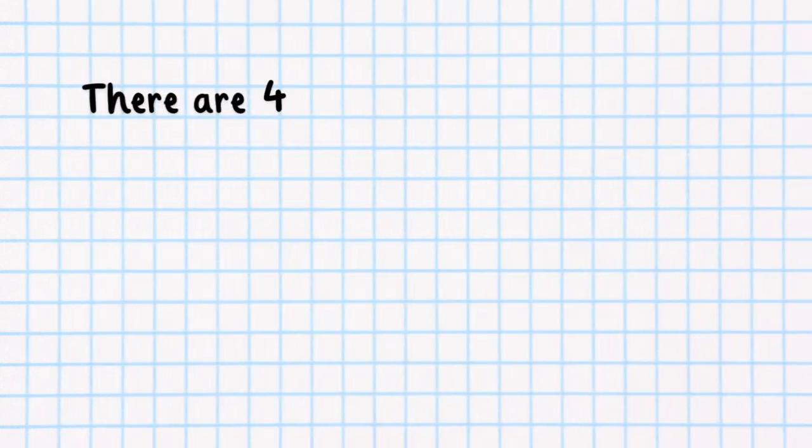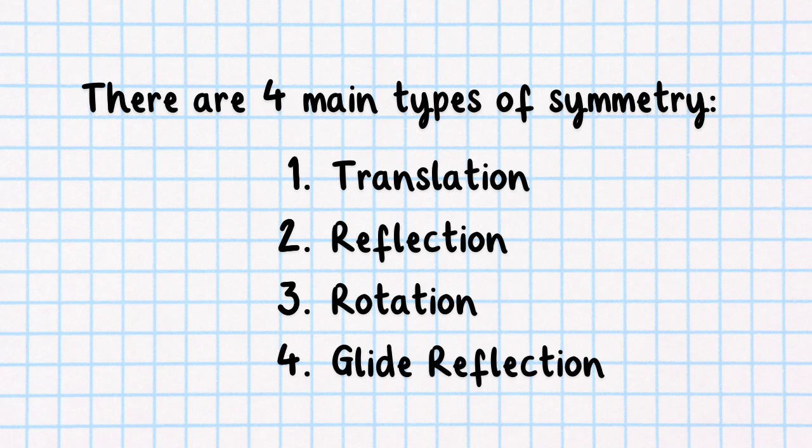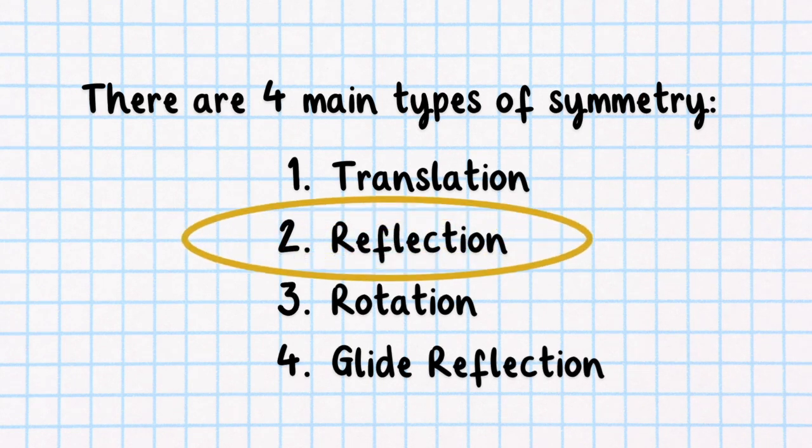Now there are four main types of symmetry: translation, reflection, rotation, and glide reflection. But we're diving into reflectional symmetry, also known as mirror symmetry or line symmetry.